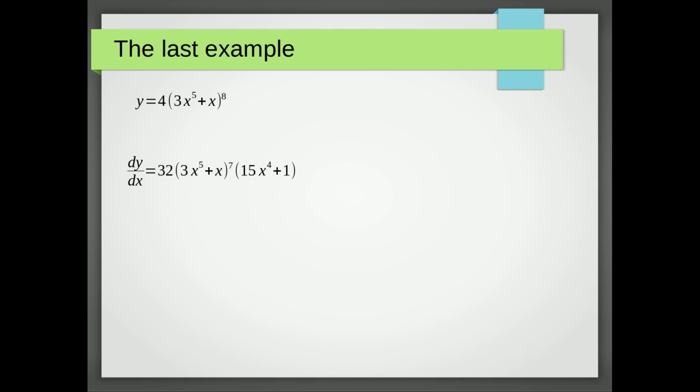What we're going to do is treat that inner function as if it was just an x and imagine all we had to do is differentiate 4x to the 8. Now if we differentiated 4x to the 8 we'd get 32x to the 7.